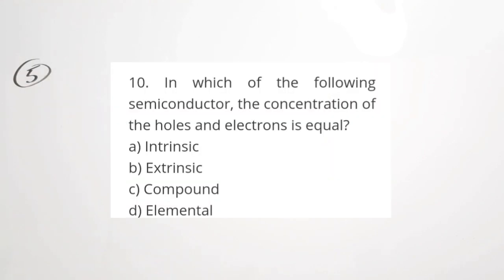Fifth question: in which of the following semiconductors is the concentration of holes and electrons equal? Option A: intrinsic. Option B: extrinsic. Option C: compound. Option D: elemental. The correct answer is A, intrinsic. That is why we call the material as intrinsic.